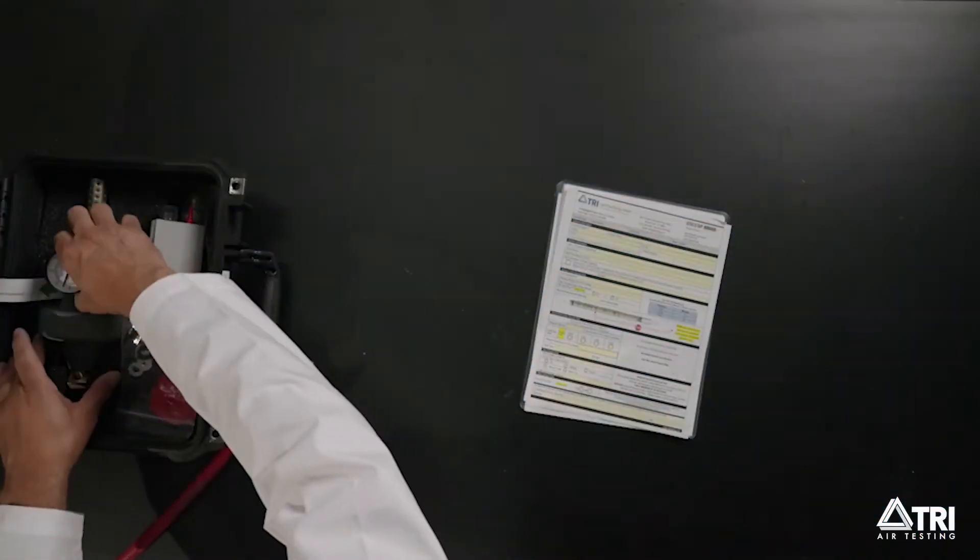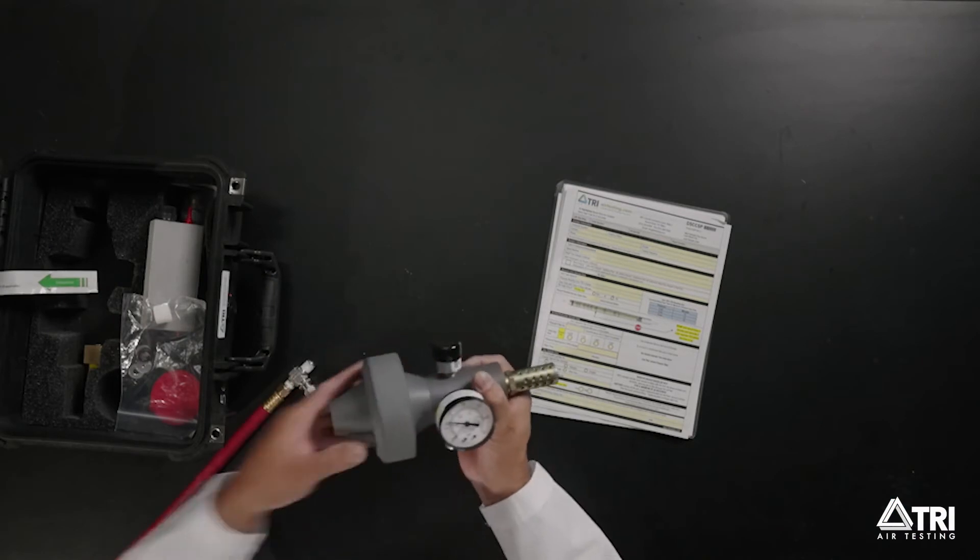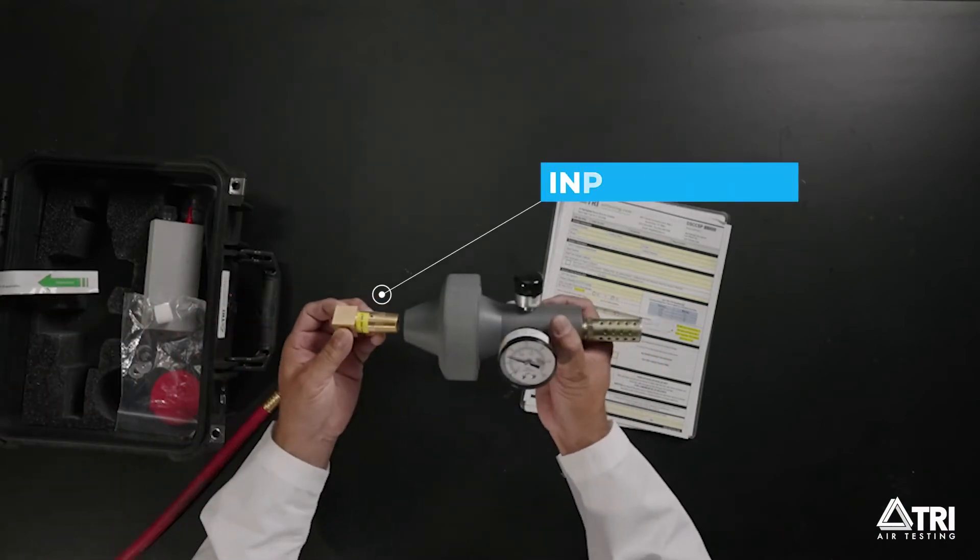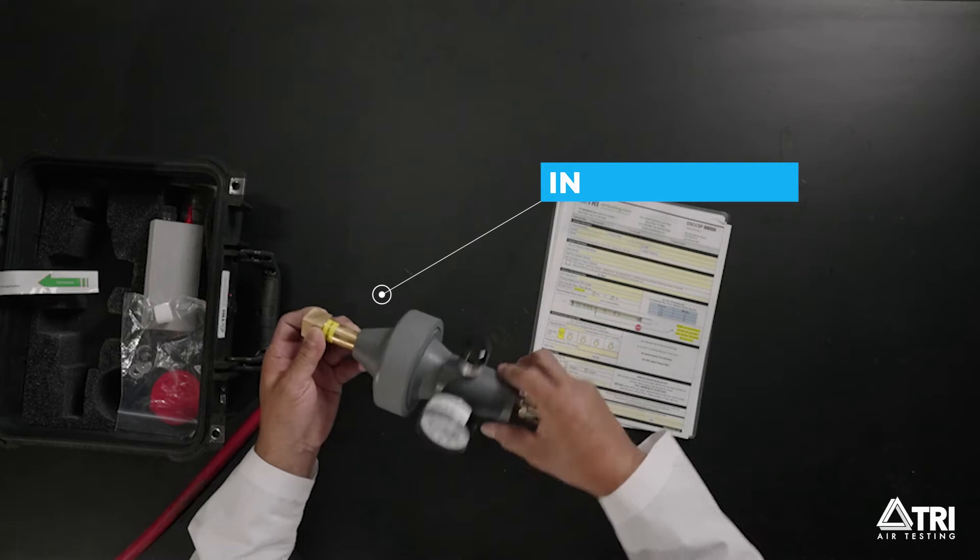Step 1. In your test kit, you will have input fittings that look like this, so first connect the input fitting to the flow section if it is not connected.